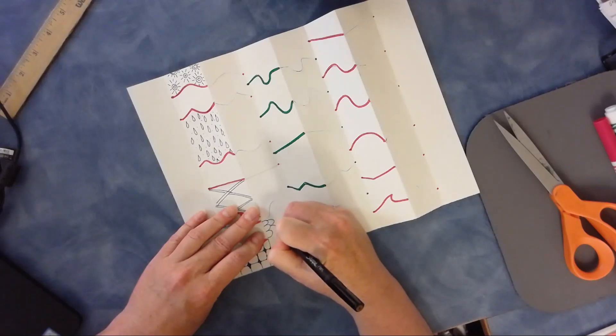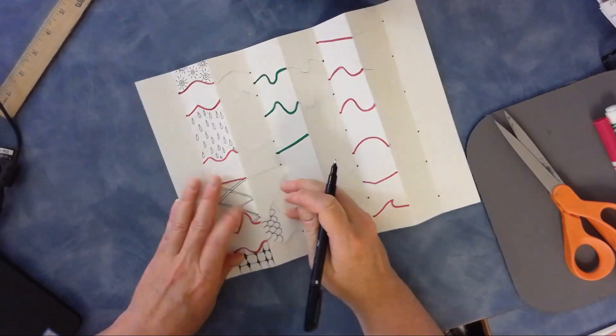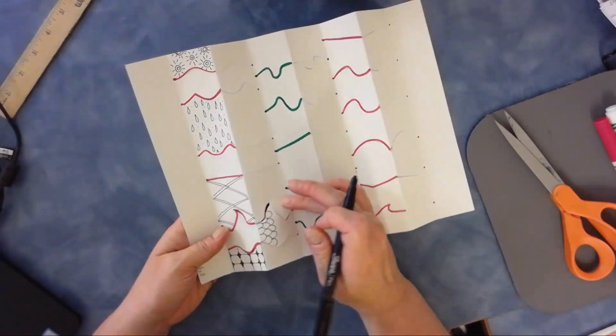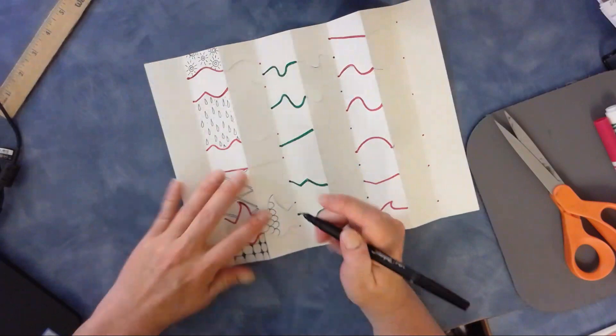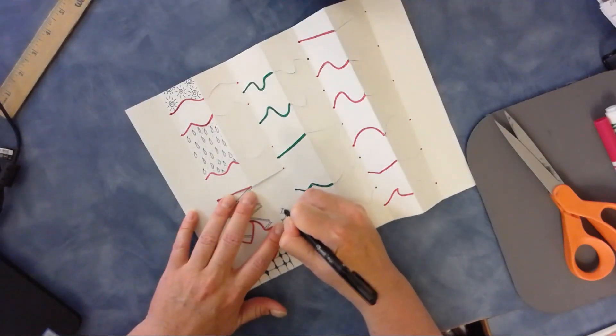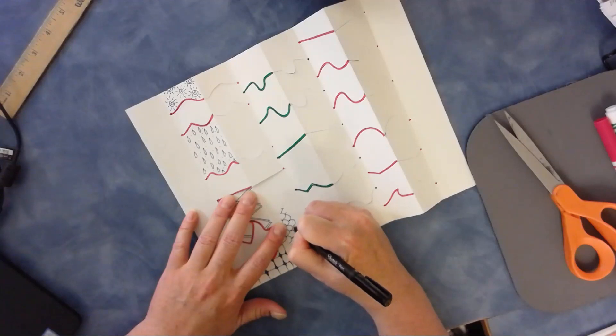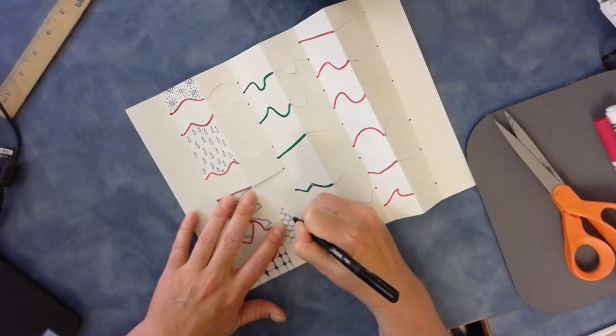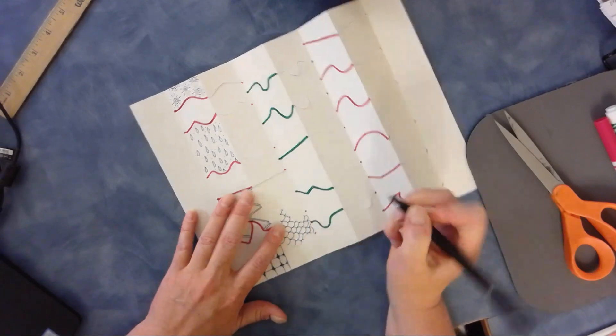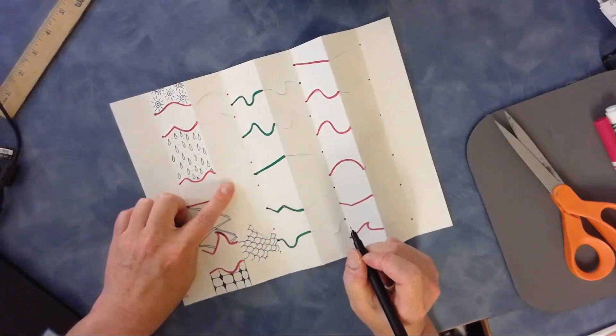And I'm choosing a fish and fish scales. Now here I want, I might move the paper a little bit so that I can see the lines so that I stay inside of my section here.